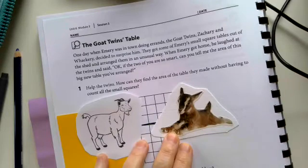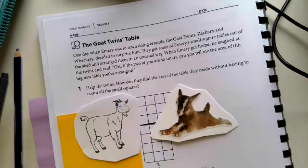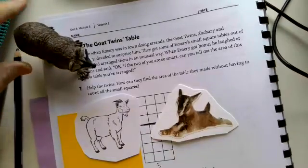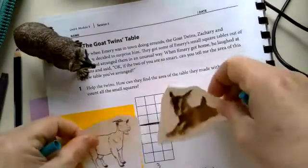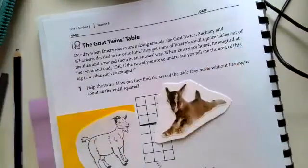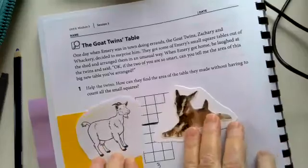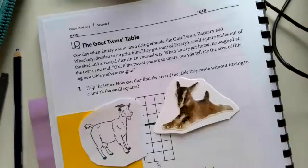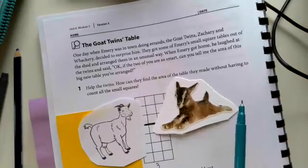Hmm, I wonder where Emery is. He's around here somewhere. Oh, here he is. Let's surprise Emery. Okay, he should be back soon. Okay, so they got some of Emery's small square tables out of the shed and arranged them in an unusual way.